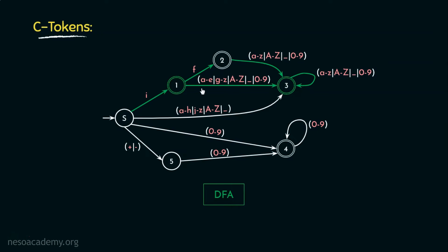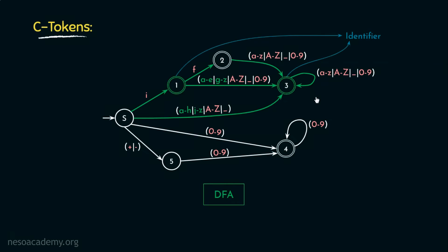The transition from state 1 to state 3 covers small letters a to e or g to z — that is, any small letter except 'f'. So after 'i', any other small letter, capital letter, underscore, or digit moves to state 3. From the initial state S, seeing any small letter except 'i', any capital letter, or an underscore also leads directly to state 3. So if the machine stops at state 1 or state 3, it recognizes the lexeme as an identifier.